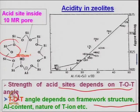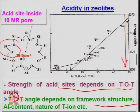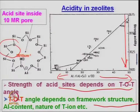TOT angle depends on the framework structure during gel formation, on aluminum content, and on the nature of the T ion. Acidity is increasing on one side — representing aluminum divided by (aluminum plus silica) — so aluminum is more on that side. Aluminum decreasing means silicon increasing, and higher silicon means higher acidity for these kinds of zeolites.